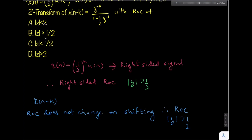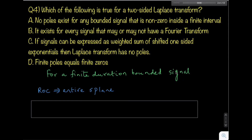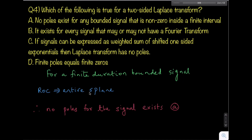Returning to the Laplace transform question: for a finite-duration bounded signal, the ROC is always the entire s-plane. As long as the ROC is the entire s-plane, there are no poles for this signal. Therefore no poles exist for a finite-duration bounded signal, and the answer to that question is option A.